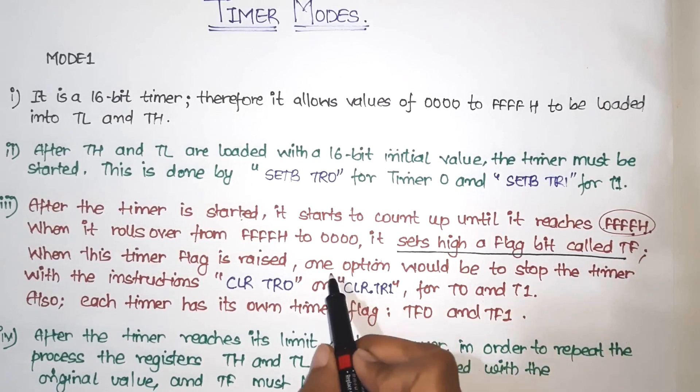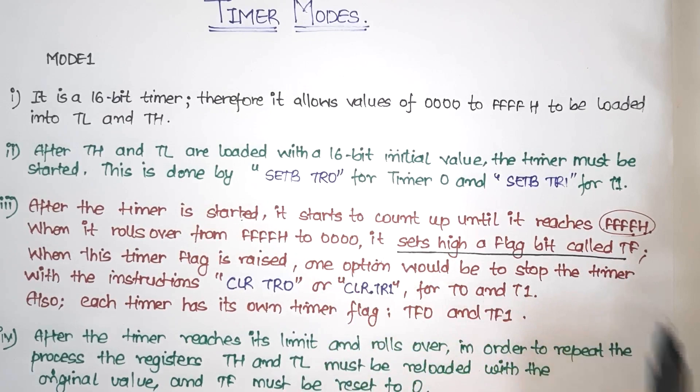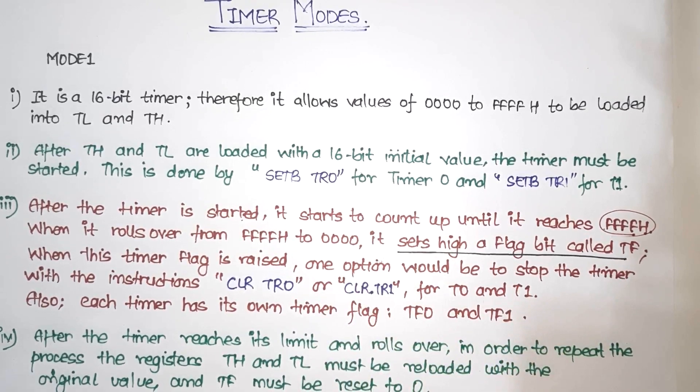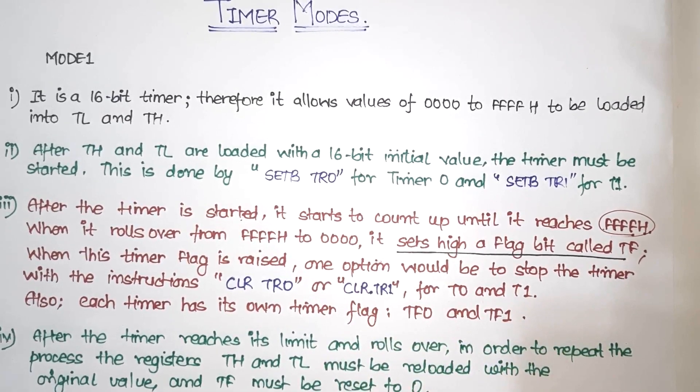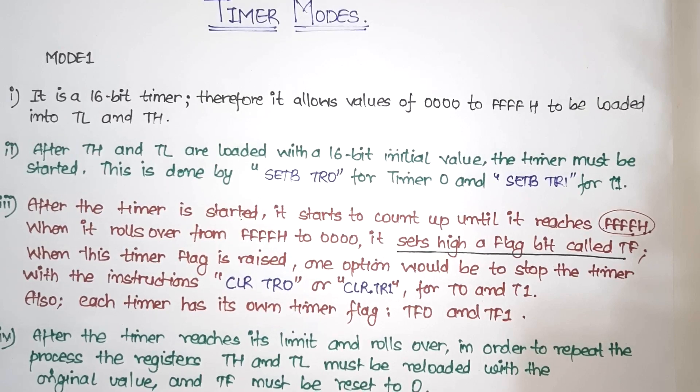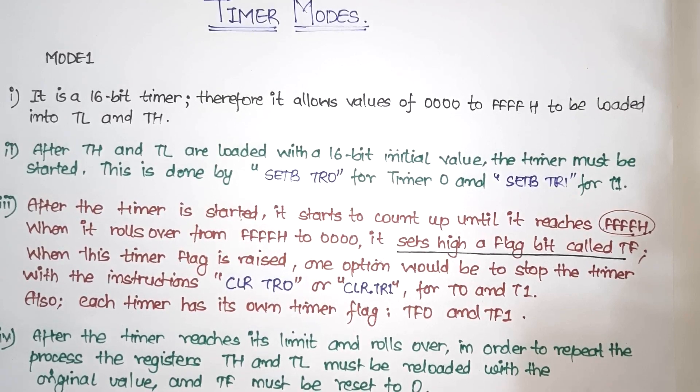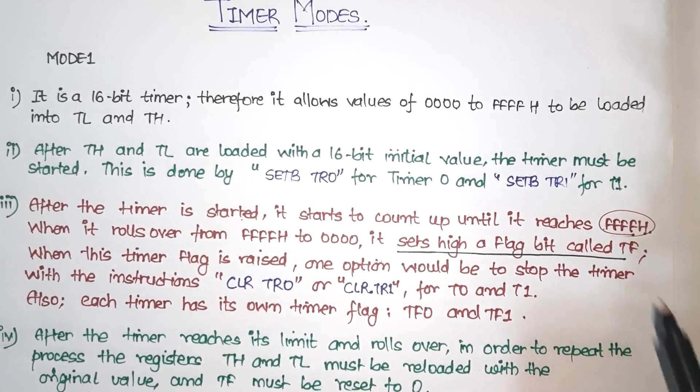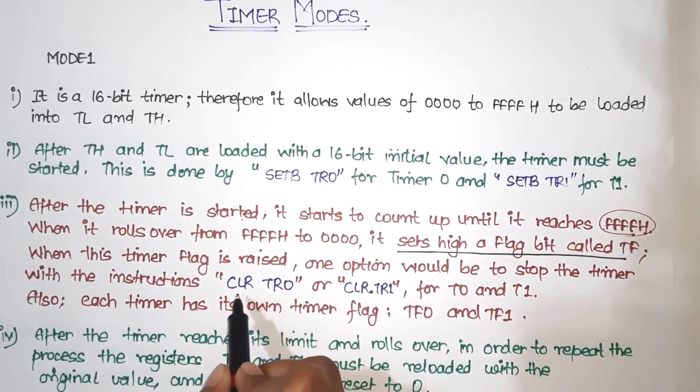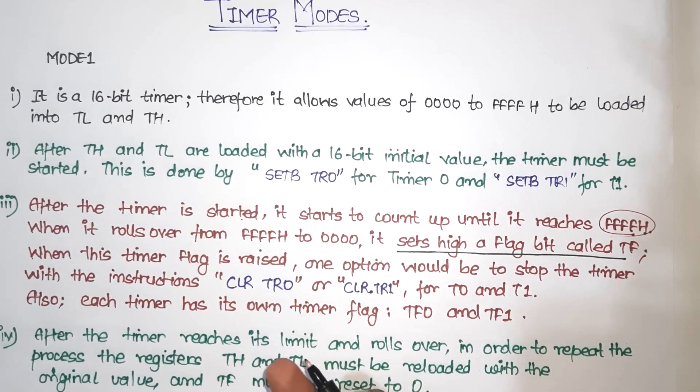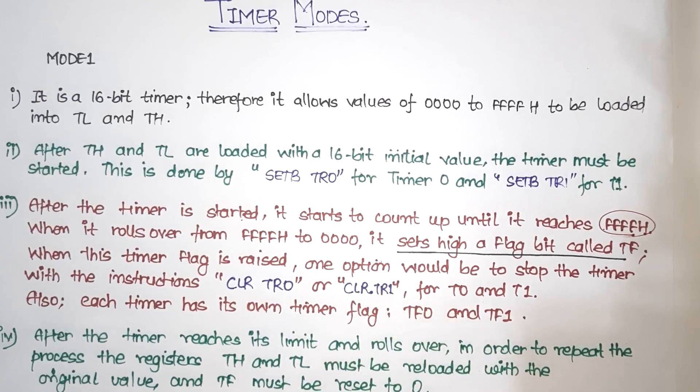So one option would be to stop the timer. One is that if it rolls back to 0, we can stop the timer or continue. So what if we want to stop the timer? We can use the instruction CLR TR0 if we use timer 0 and CLR TR1 if we use timer 1.